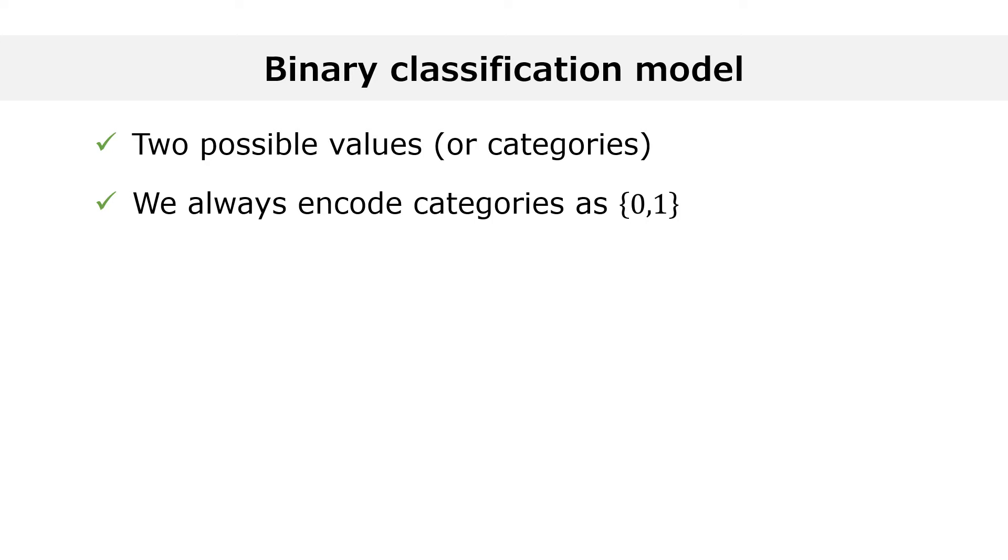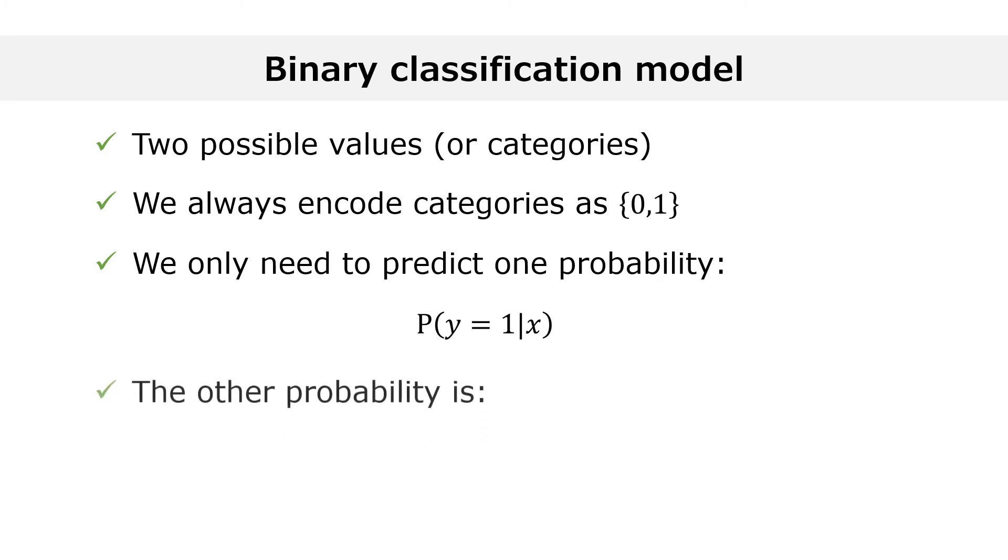In a binary model, we only need to predict the probability that y is equal to one. We can then derive the probability that y is equal to zero as one minus the probability that y equals one.